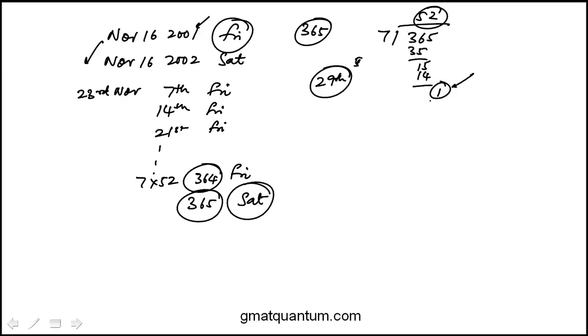Now, they tell us that years 2004, 2008, and 2012 had 366 days, or those are leap years. The question is, what day of the week was November 16, 2014? So I just did it manually, which means 2003 would be Sunday, because 2002 was Saturday.